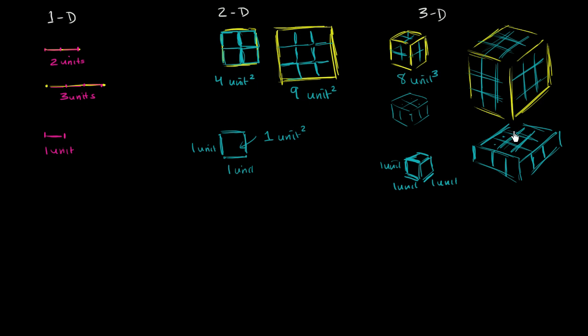And each of these have one, two, three, four, five, six, seven, eight, nine cubes in it. Nine times three. You're going to have 27 cubic units in this one right over here.